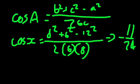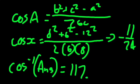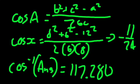Now this negative sign tells us the angle is going to be obtuse. So basically, that's pretty much it. So cos negative 1 of that is equal to, and that comes out to 117.28 degrees.